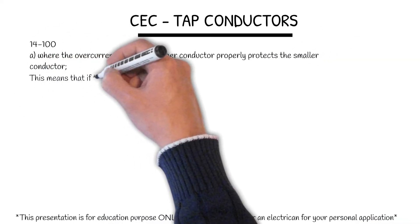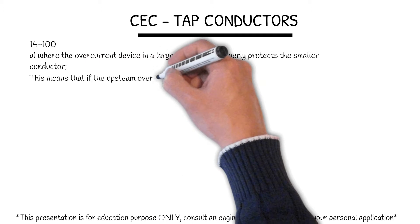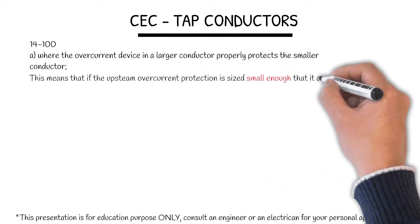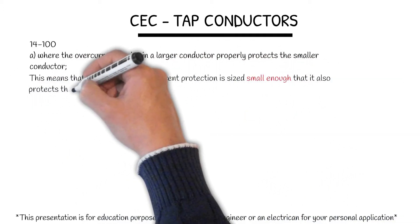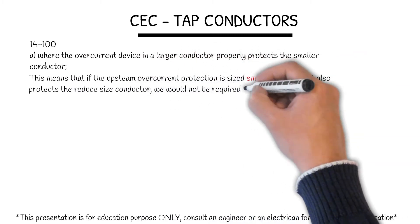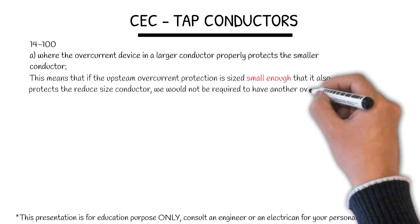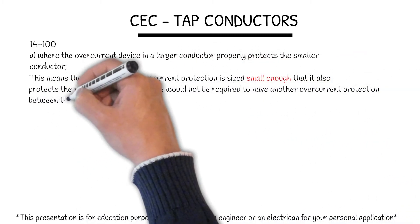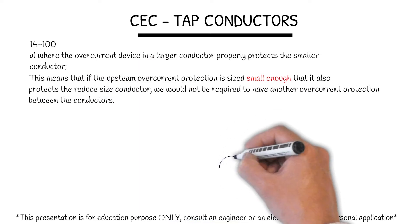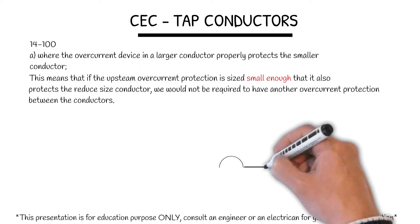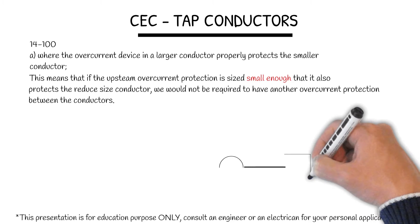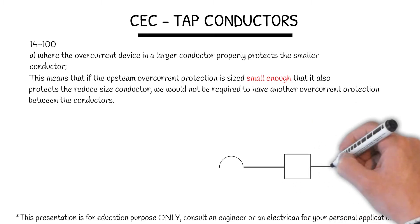This means that if the upstream overcurrent protection is sized small enough that it also protects the reduced size conductor, we would not be required to have another overcurrent protection between the conductors. Let's look at an example here that will illustrate this statement.